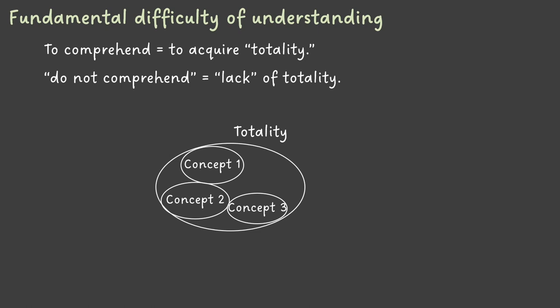But today, please accept this jump. You can acquire each concept from the text, and then you are going to imagine the totality. Once you have the totality, you can find out something is missing. This is the point of not being understood. This is the unknown.